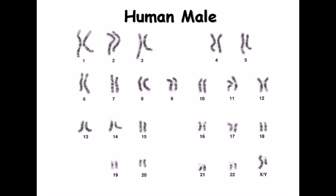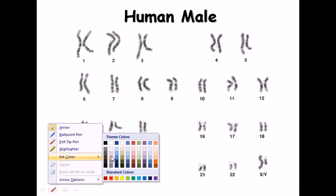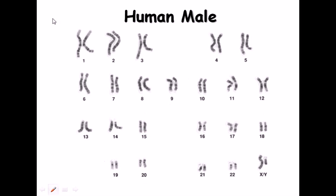This is a karyotype of a human male. In humans, we have a double set of chromosomes in each case, so humans are called diploids — 2n type organisms, where n is the number of sets. Two sets of chromosomes means 2n, or diploid. Humans and many other organisms have diploid sets of chromosomes.